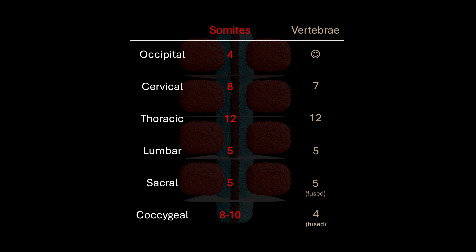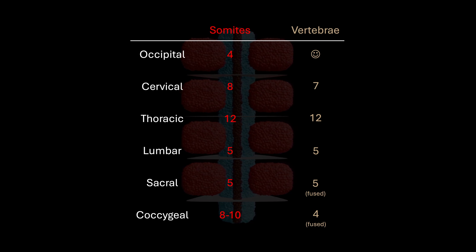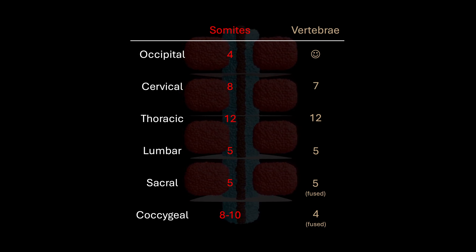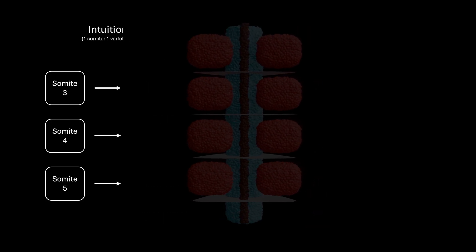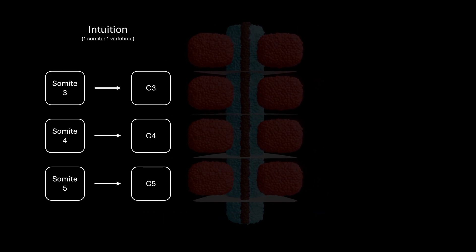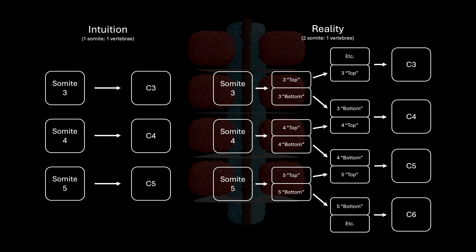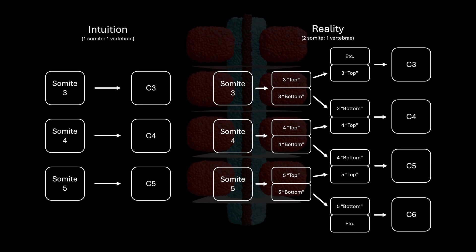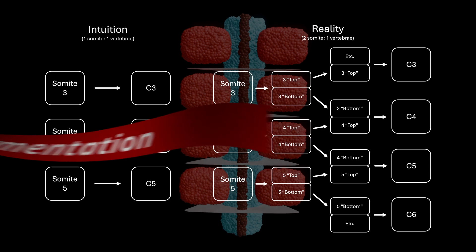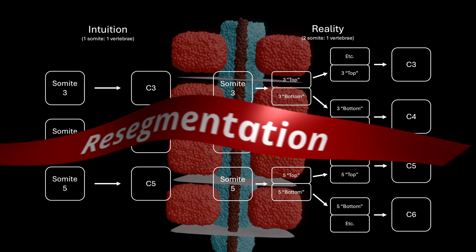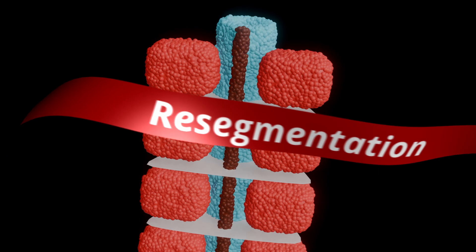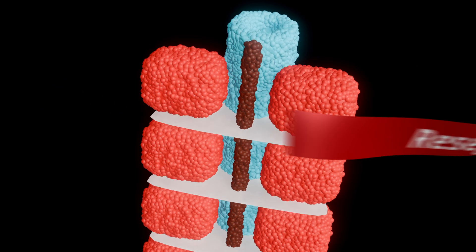If you remember from the last video, somite count loosely mirrors vertebral counts — seven cervical, twelve thoracic, etc. — but it's not a one-to-one in the way you might initially expect. Each vertebra is actually built from two adjacent somites after a little reshuffle called resegmentation. That's the fun part we're about to go into now.